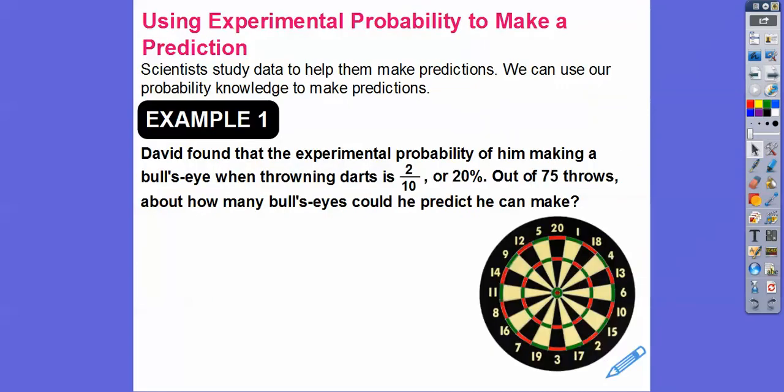Scientists study data to help them make predictions, and so they study it over and over again. We're going to use some simple examples to show how they're doing it, so we can use our probability knowledge to make some predictions.